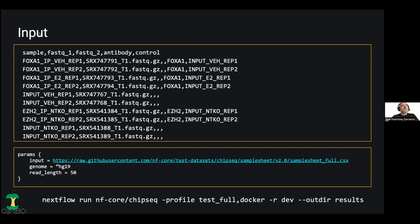This is how the input looks. You have the sample, FASTQ1, FASTQ2, and the antibody control columns — we've seen this format several times in similar pipeline talks. Samples with the same name prefix before REP1 and REP2 will be merged by the pipeline. If you have single-end reads, you just provide the file in FASTQ1. If you have paired-end reads, you provide the second file in FASTQ2. This column indicates the IP, and this one is the control. The control itself is listed as a separate row without a control field.